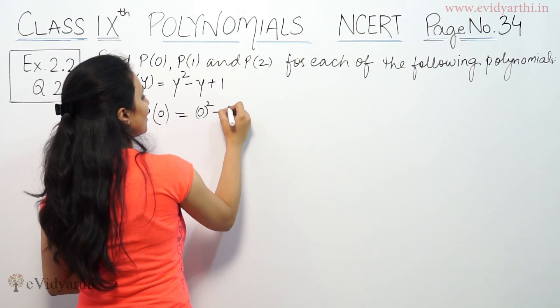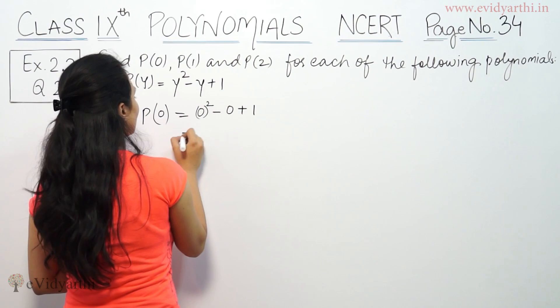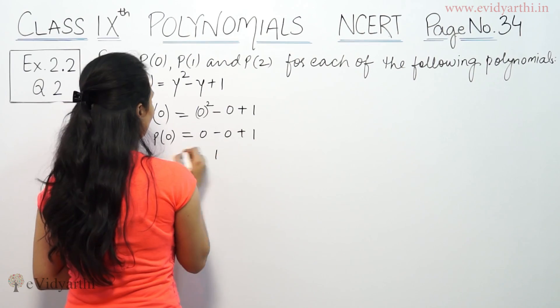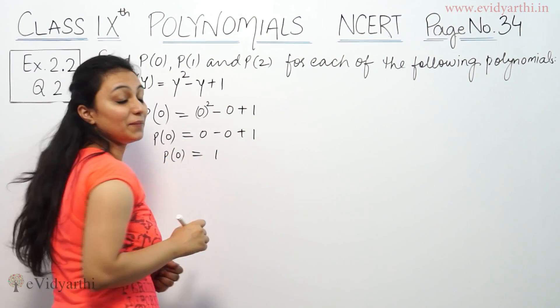That means 0 square minus 0 plus 1. So P(0) will be 0 minus 0 plus 1. That means P(0) value is 1.